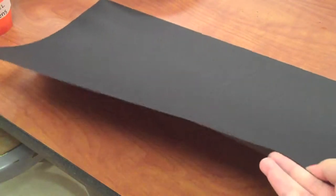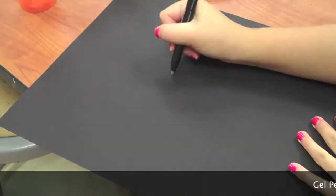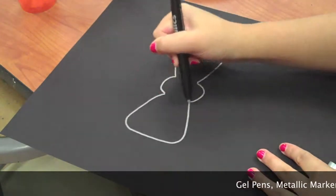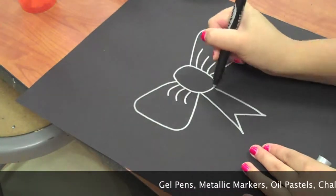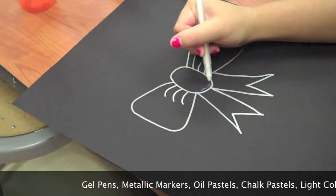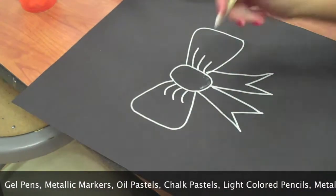Now I'm going to tell you what works best on dark colored construction paper. You can try gel pens, metallic markers, oil pastels, chalk pastels, light colored pencils, metallic paint, and white paint.